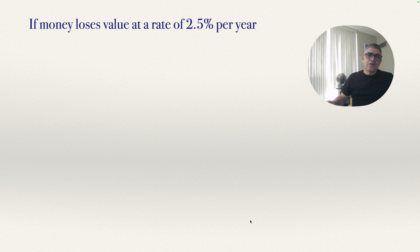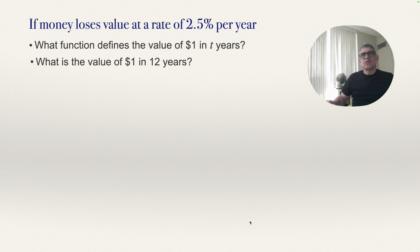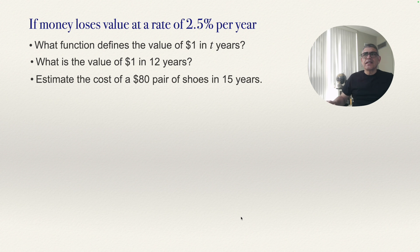If money loses value at a rate of 2.5% per year, answer these questions. First, what function defines the value of $1 in 10 years? Second, what is the value of $1 in 12 years? And finally, estimate the cost of an $80 pair of shoes in 50 years. Let's answer the first question.